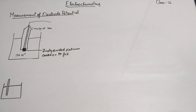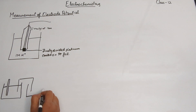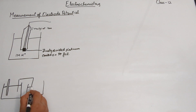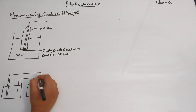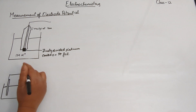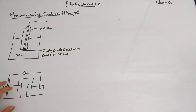No, we cannot. What we need is another half cell — we need to connect it through a salt bridge and a voltmeter. Basically we need a whole setup in order to even calculate the electrode potential of a particular half cell.